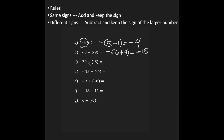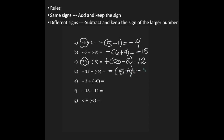For C, I have 20 plus negative 8. My signs are different, so I'm going to subtract: 20 minus 8. 20 is the bigger number, so my answer will be positive 12. For D, notice my signs are the same — I have two negatives I'm adding — so my answer will be negative. I'm just going to add 15 plus 4, so my answer is negative 19.